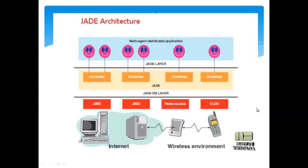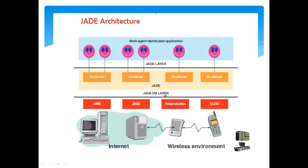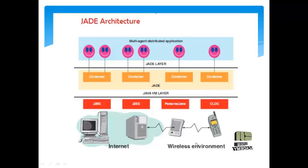In the JADE architecture, there is a set of agents belonging to separate containers, all controlled by the JADE layer. JADE includes a virtual machine layer supporting J2SE, J2EE, and Java CLDC for both wireless and wireline networks. JADE is extremely versatile — it fits the constraints of environments with limited resources and has already been integrated into complex architectures such as .NET or J2EE.